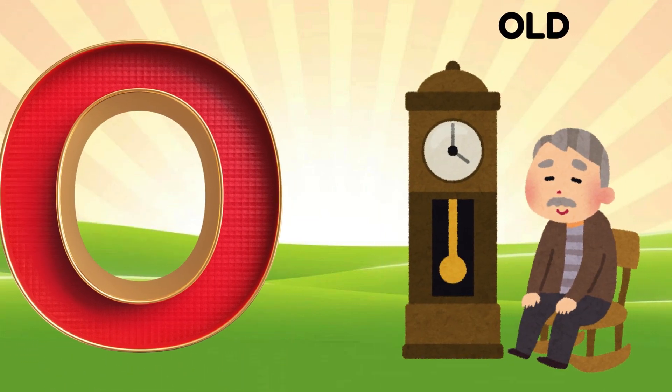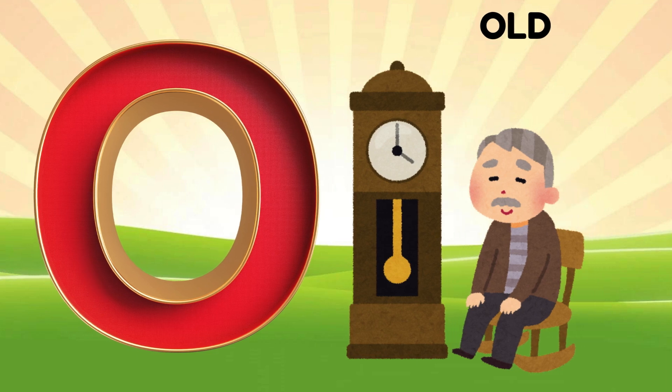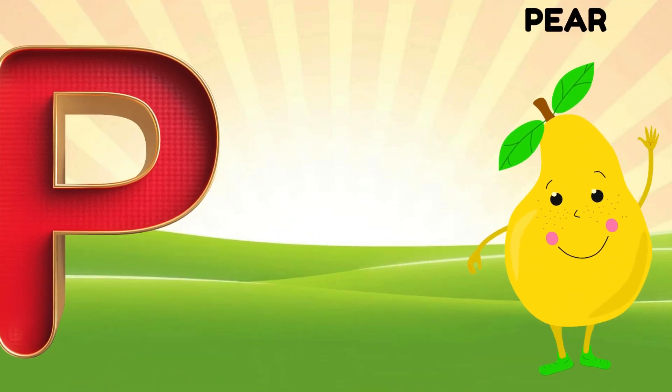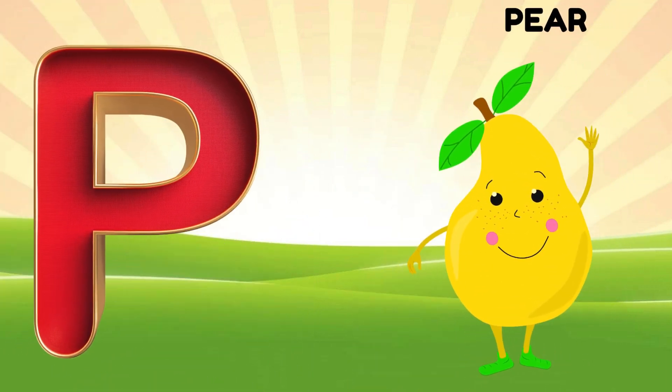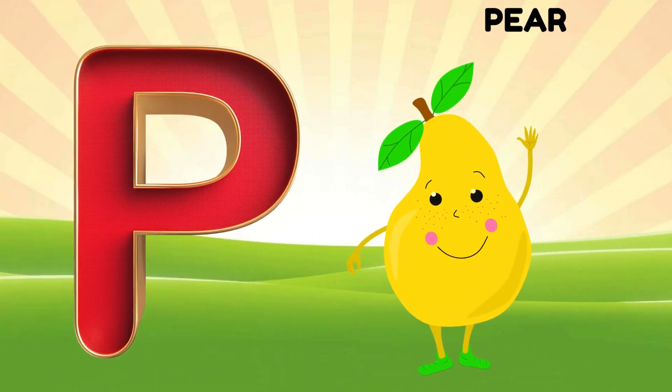O is for old, o-o-old. P is for pair, b-b-pair.